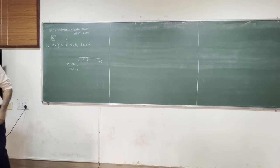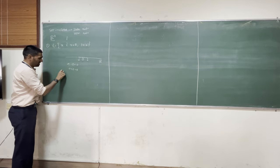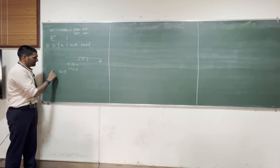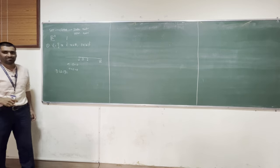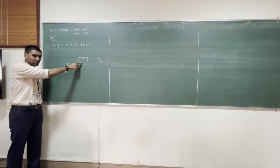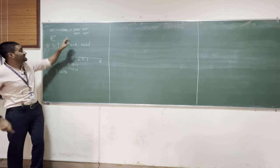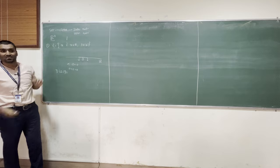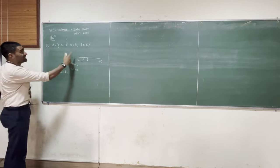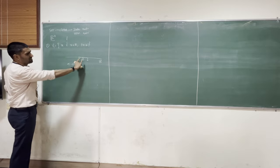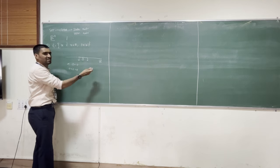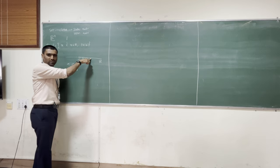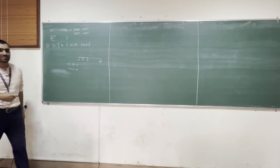One quick test: a vector space is supposed to have 0. This set has 0, so it can be a vector space. If 0 were not there, you immediately say it's not a vector space. Let's take 0.5. If I multiply it by 2, I get 1, still in the set. But if I multiply by 3, I get 1.5, which is not in this set. That means this is not closed under scalar multiplication - so this is not a vector space.